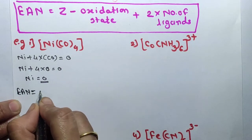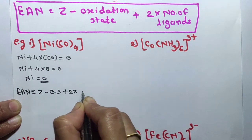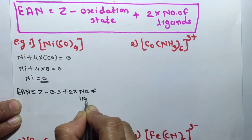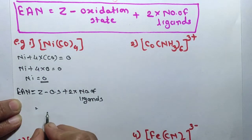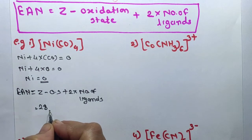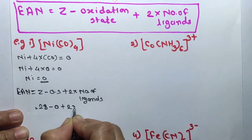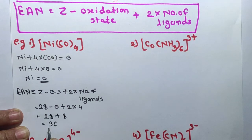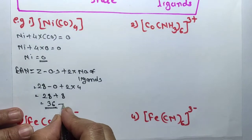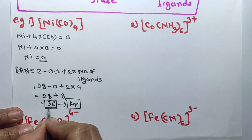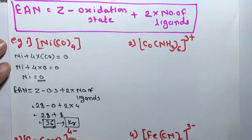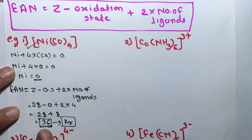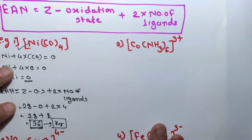Now find out the effective atomic number. EAN is equal to Z minus oxidation state plus 2 into number of ligands. The atomic number of nickel is 28, minus oxidation state zero, plus 2 into 4 ligands, gives 28 plus 8 equals 36. 36 is the atomic number of krypton, so nickel tetracarbonyl is the most stable complex because its EAN equals the nearest noble gas.